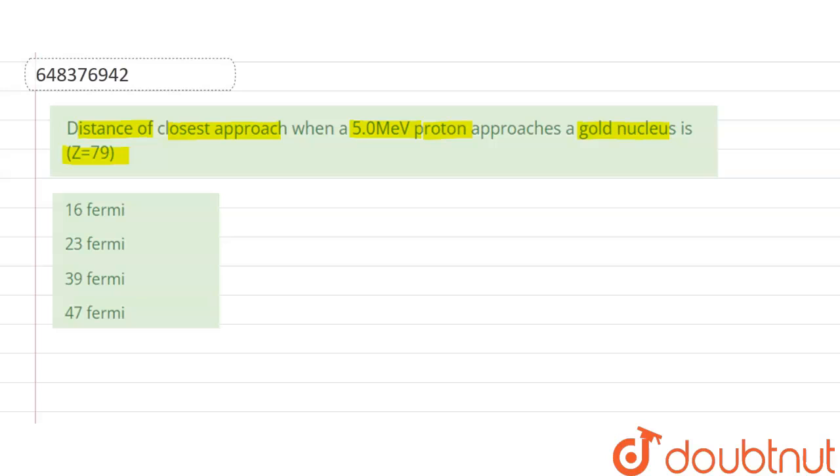Now, the distance of closest approach is given by R = 1/(4πε₀) × Ze²/E.